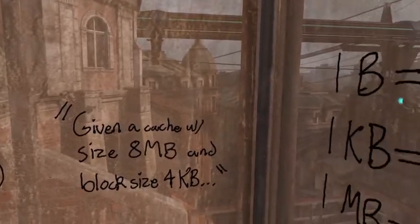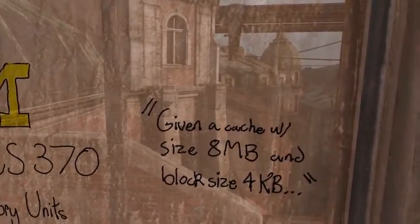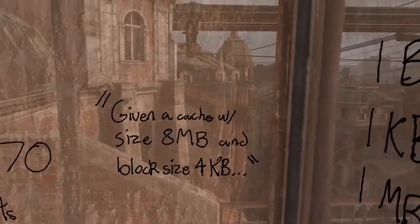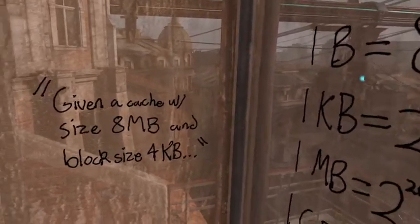For example, we may give you a problem that looks something like this, where you're given a cache that has a size of 8 megabytes and a block size of 4 kilobytes.